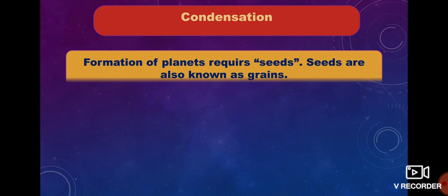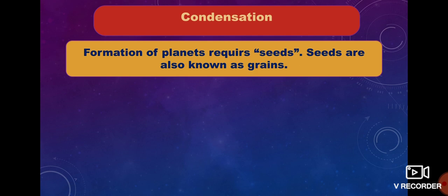In this video we can see evidence supporting the solar nebula disk theory: first, the Orion Nebula where new stars are born, and second, the HL Tauri protoplanetary disk. As we saw in the video, the condensation process plays an important role in planet formation. Formation of planets requires seeds, also known as grains. The process by which seeds grow is called condensation.